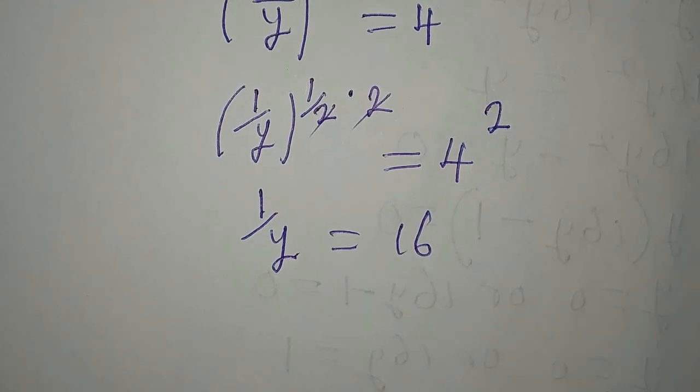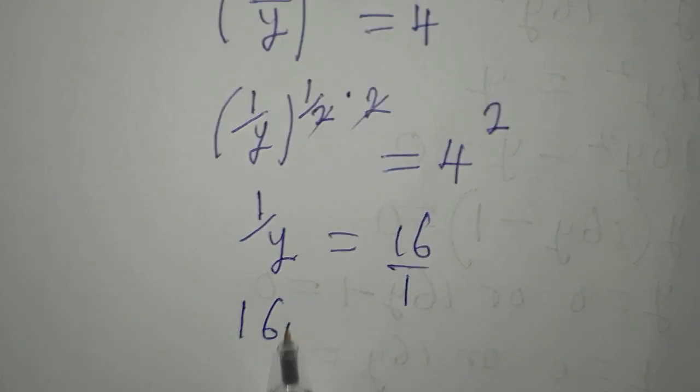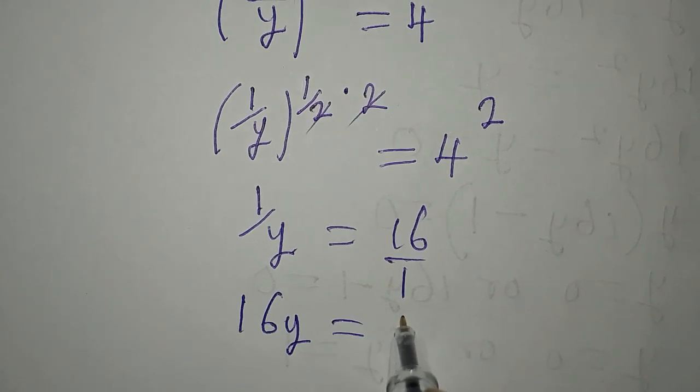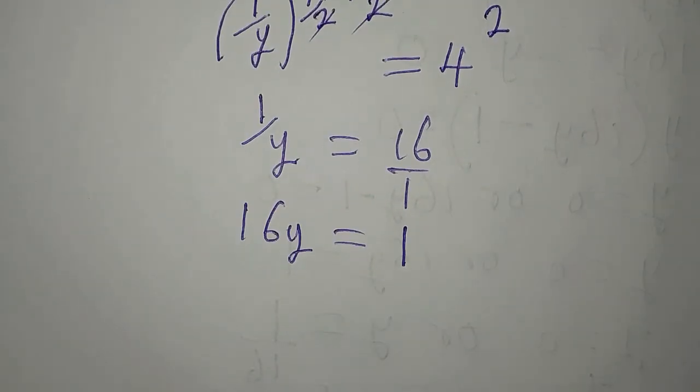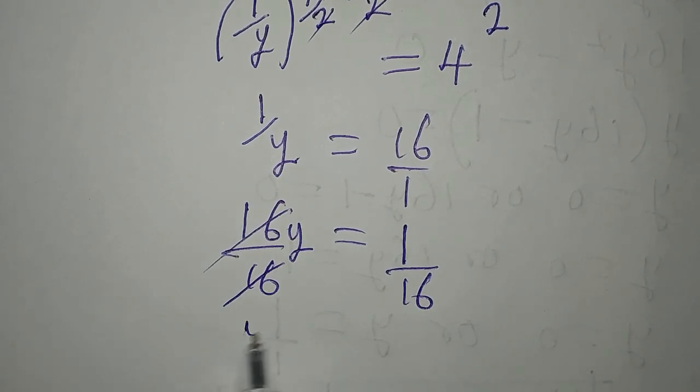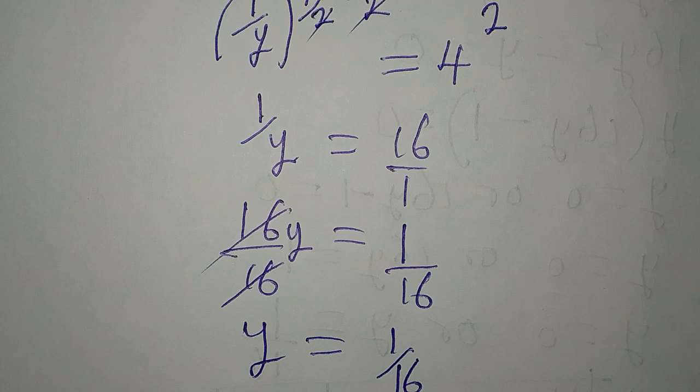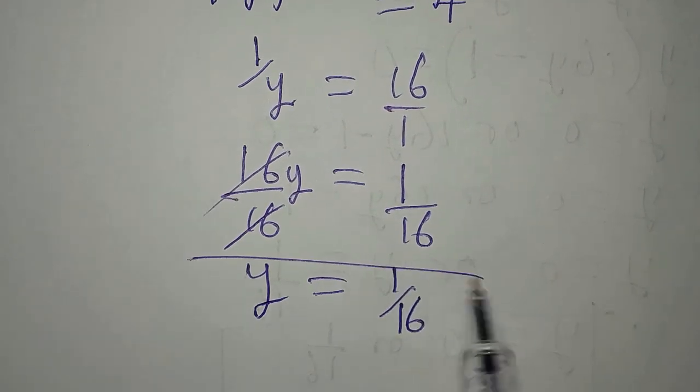Now this is going with this, meaning that 1 over y is equal to 16. And at this point you cross multiply because this is over 1. Now 16y is equal to 1, the variable divided by 16.